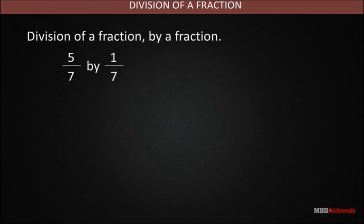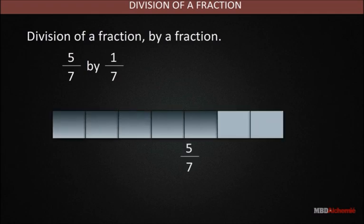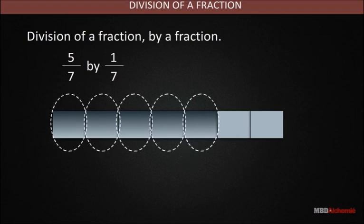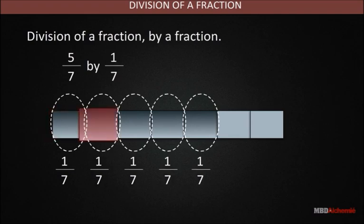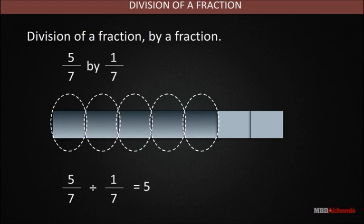Division of a fraction by a fraction — visual example: let's divide 5/7 by 1/7. This aims at finding how many times 1/7 fits into 5/7. Take a rectangular strip of paper representing 5/7 and encircle the regions within it that represent 1/7. Count the number of sets of the divisor 1/7 that fit into the dividend. There are five circled sets of 1/7 in 5/7. Therefore, 5/7 ÷ 1/7 = 5.